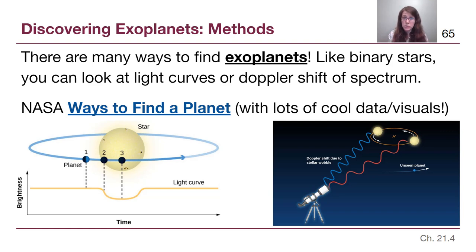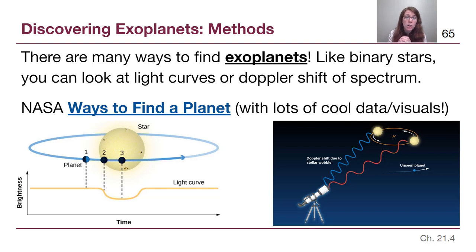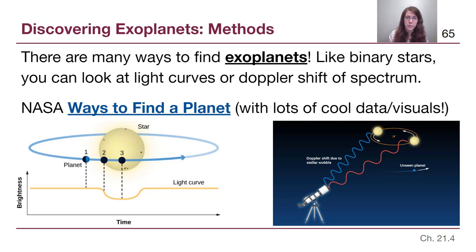With planets, it is very much the same kind of toolkit. The big difference is that we are looking at a big object that is also shining brightly — the one star — and a very small object that in many cases is not producing any light at all, the planet. Some, very few, but some systems have been directly imaged, just like with binary stars.